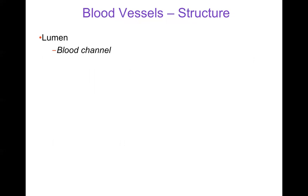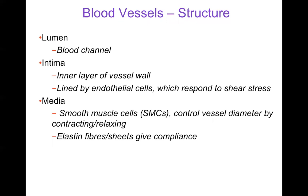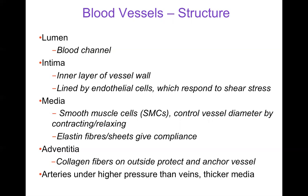Looking at blood vessel structure and terminology: the lumen is the blood channel where blood flows. The intima is the inner layer of the vessel wall, covered by endothelial cells, which are not inert — they can respond to shear stress and release various substances. Beyond the endothelial cells is a layer called the media, which is mostly smooth muscle cells that can control vessel diameter by contracting and relaxing. Larger vessels have elastin fibers and sheets to give compliance for oscillating flow. Beyond the media is the adventitia, which has collagen fibers to protect the vessel and anchor it in place — that's the outermost layer. Arteries are under higher pressure than veins, so they have thicker media and more elastic structure to support the high pressure from the heart.